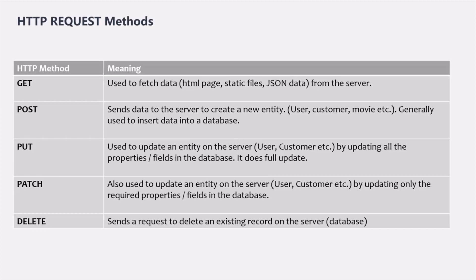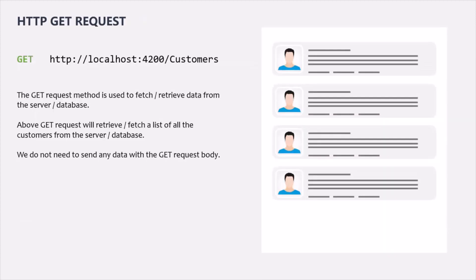That is the difference between PUT and PATCH. Then we have the DELETE HTTP method, which we use to delete an existing record on the server or in the database. These are the five most common and important HTTP methods used while developing a backend application. There are a few others, but they are not that important. Now let's talk about each of these HTTP methods one by one in detail, starting with the GET HTTP method.